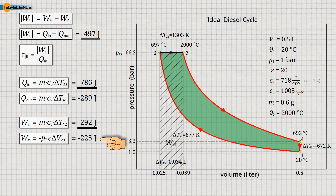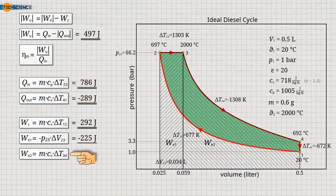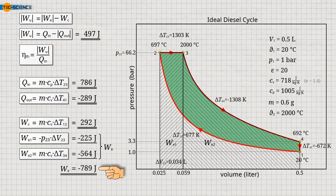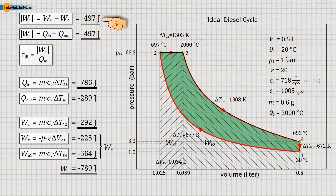It is important to note that the corresponding base units must always be used in the formulas, which is volume in cubic meters and pressure in pascals. Now the isentropic component of the expansion must be determined. This is calculated analogously to the isentropic compression, using the temperature change from state 3 to state 4. With a temperature decrease of minus 1308 kelvin, we obtain an expansion work of minus 564 joules. The negative sign here simply indicates that the gas has done work during the expansion. The total expansion work is finally obtained by summing the isobaric and isentropic components; it is minus 789 joules. The difference between the expansion and compression work is the useful work. In this way, we obtain the same useful work as the difference in heat energy of 497 joules.